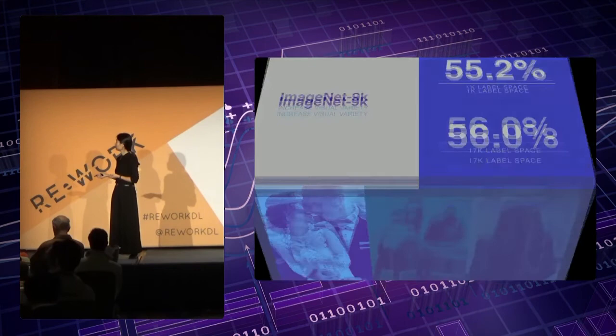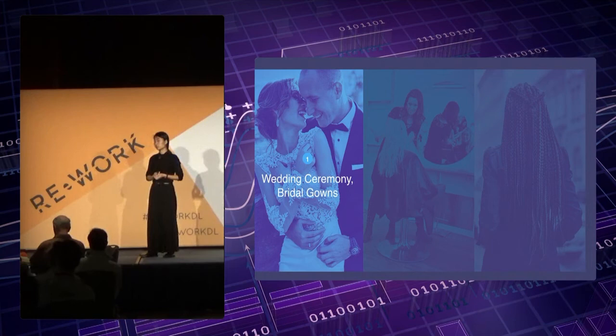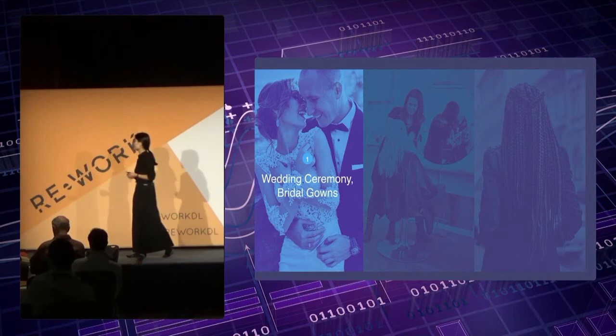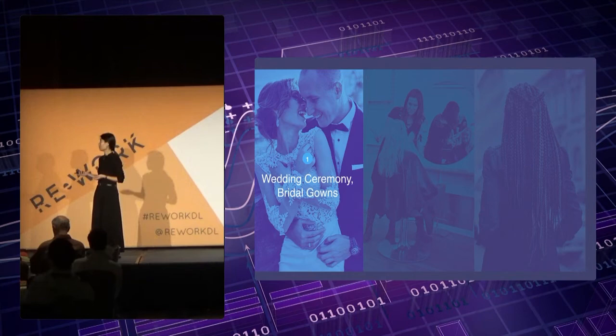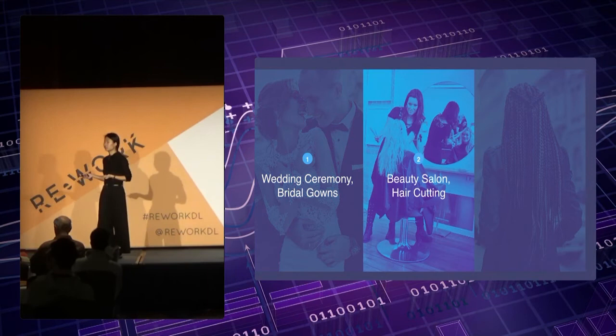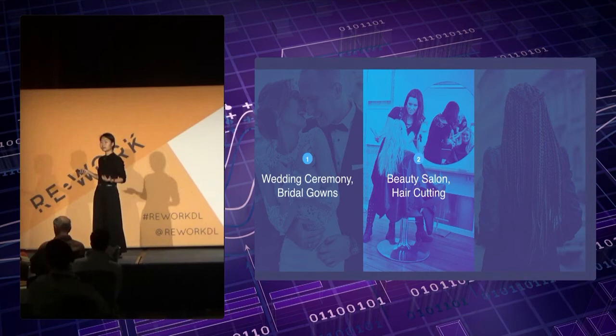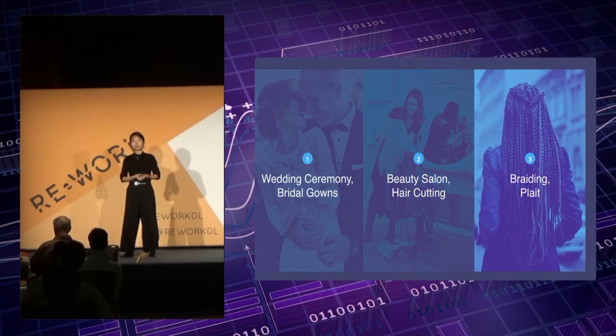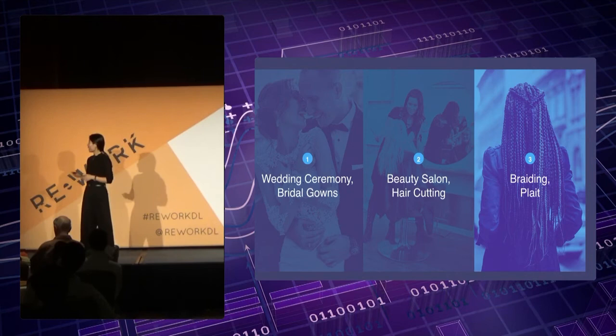Let me give a few qualitative examples to see how these numbers translate in practice. Taking one photo as an example, most existing vision models would have no difficulty predicting it as showing men and women or a dress. But now we're able to provide more accurate detailed descriptions such as wedding ceremony and bridal gowns. And in another example, instead of predicting men and women, we can now see it's a beauty salon where hair cutting is happening. Our model is able to do so because we're using hashtags as supervision, which captures the exact intent behind those images.